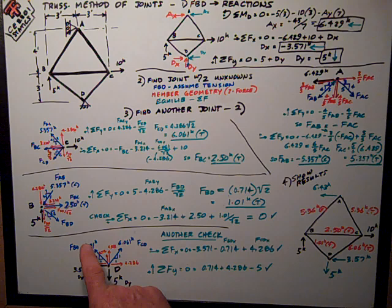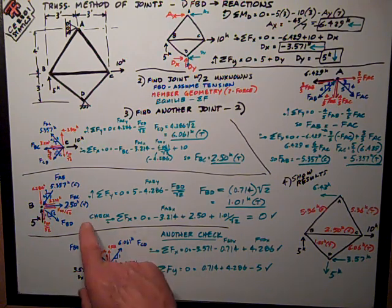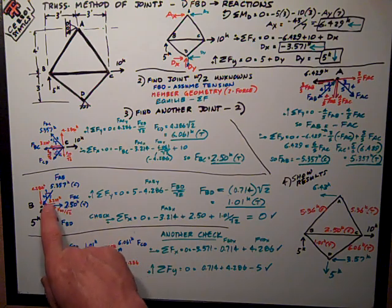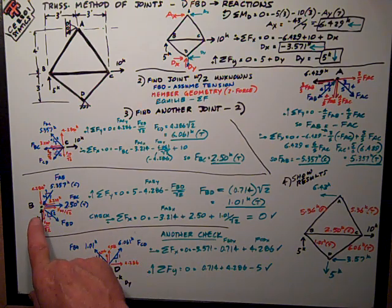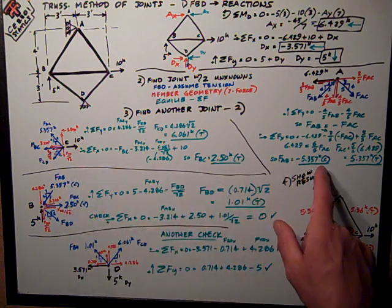So last I need to solve for this one last member so I can go down to joint B. I only have one unknown at this point because I have the applied 5 kips up and I have, from FAB, it was in compression.